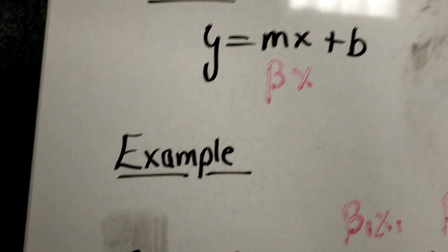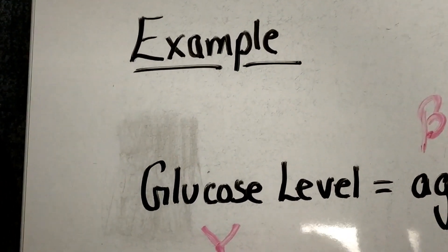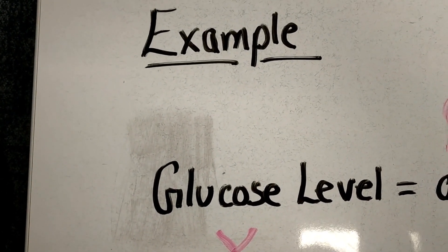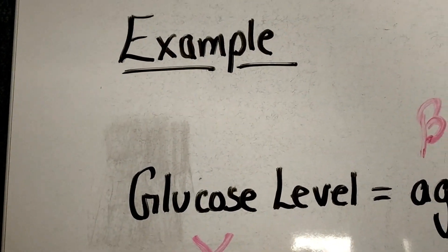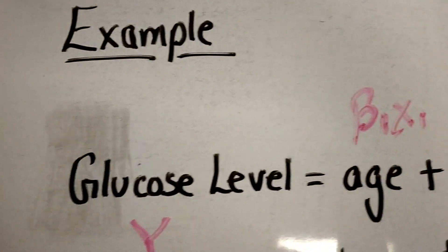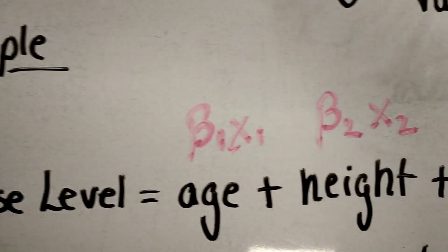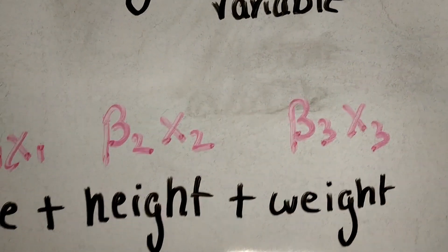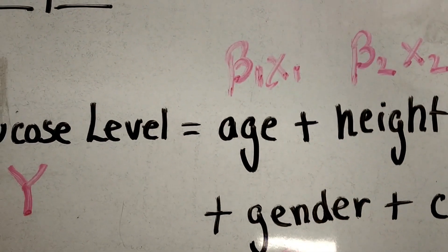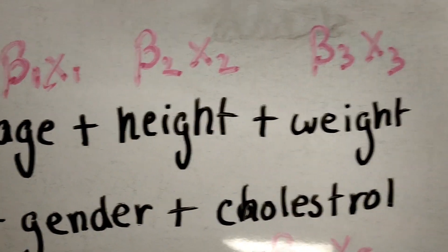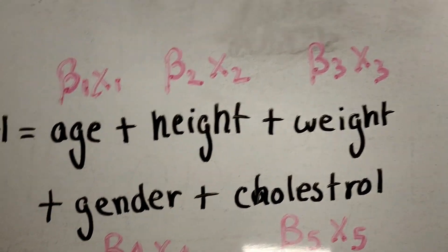Let's look at an example. Let's say we have glucose level. Glucose level in someone's body may depend on their age, their height, their weight, their gender, their cholesterol, and maybe even more.